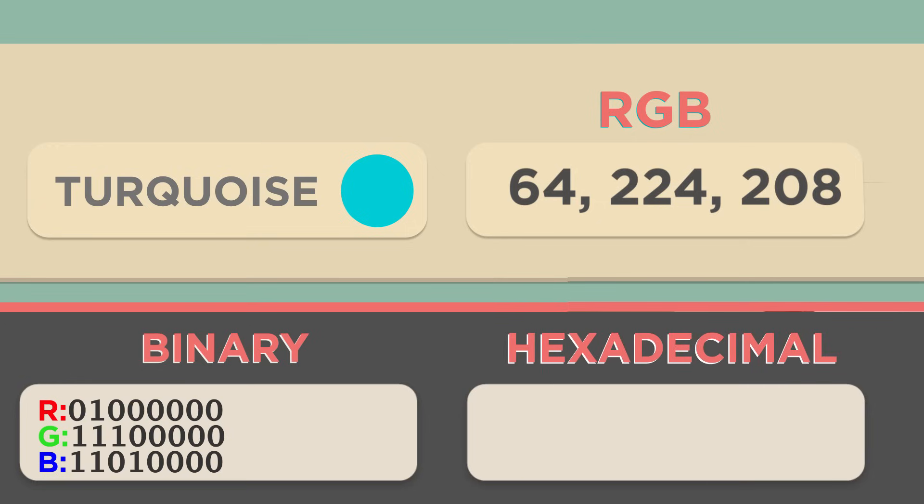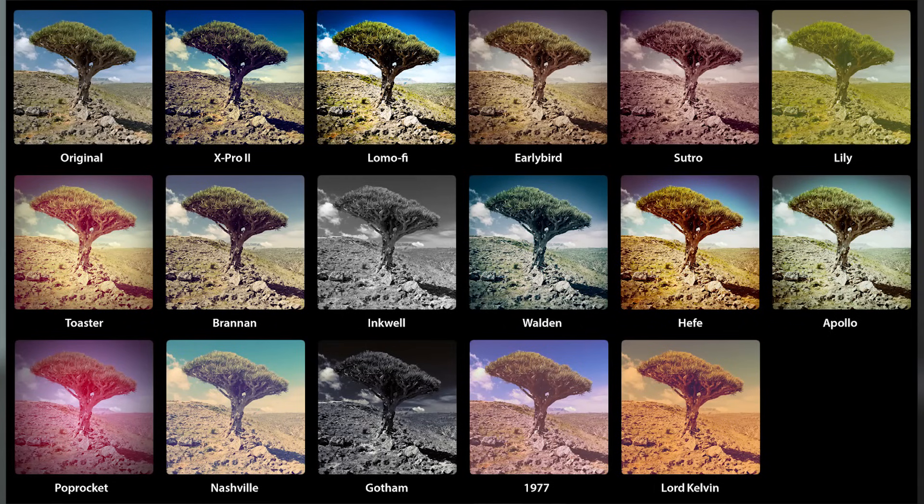Rather than binary, digital artists often use the hexadecimal number system to represent colors. We can represent the same color turquoise using only six hexadecimal digits: 40E0D0, which is a lot shorter.